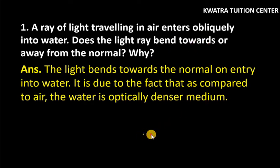First of all, let's see a diagram representation. They said that obliquely a light incident is happening on water. Now, what do we see? This light will bend towards which direction? Is it normal or away from normal?